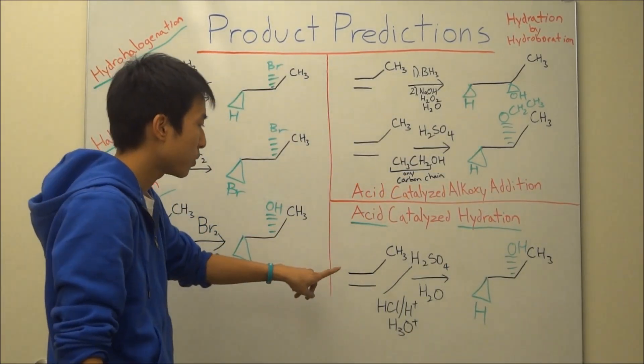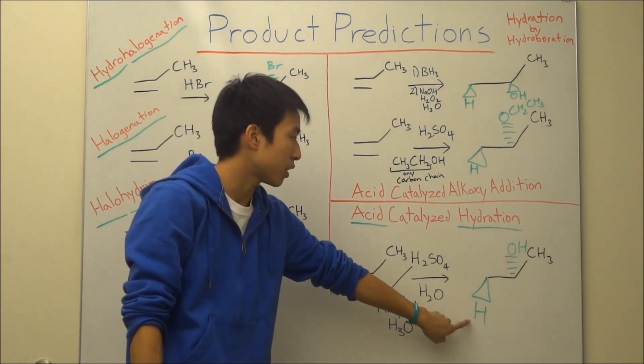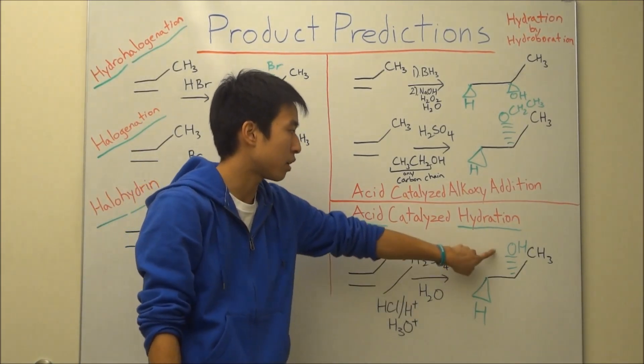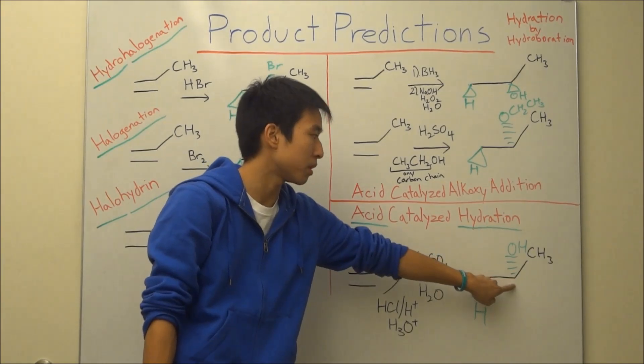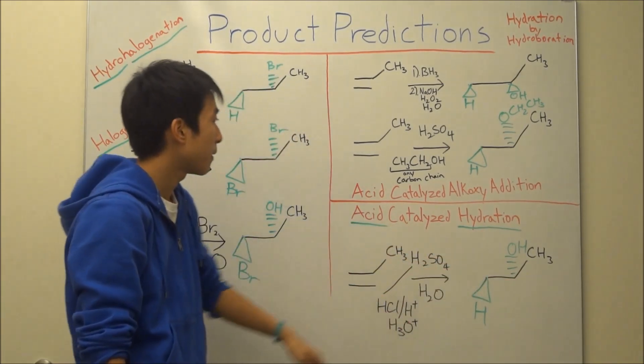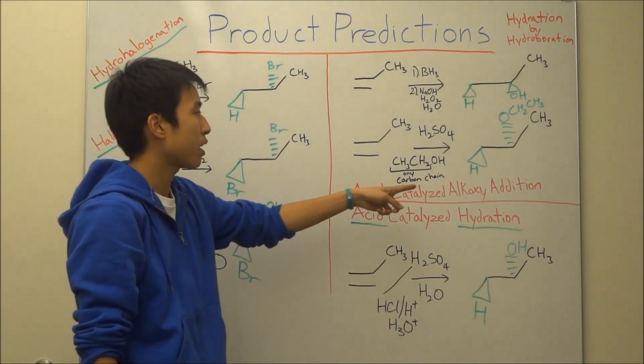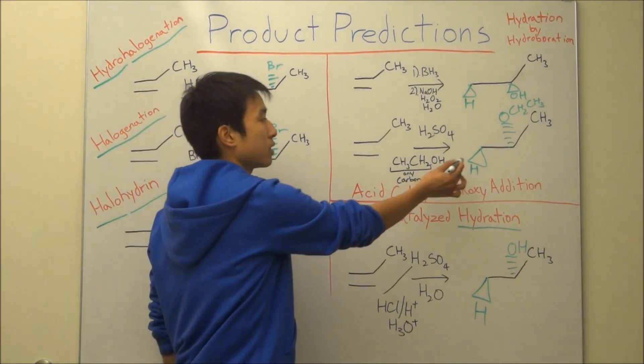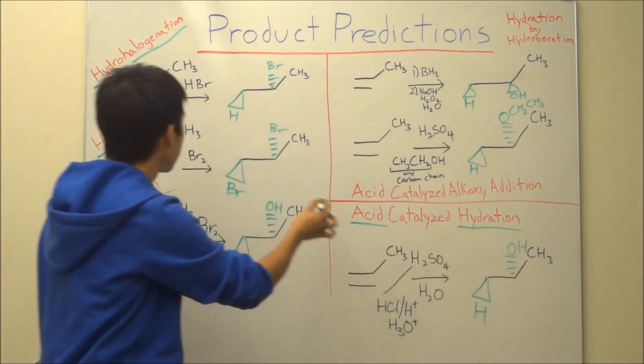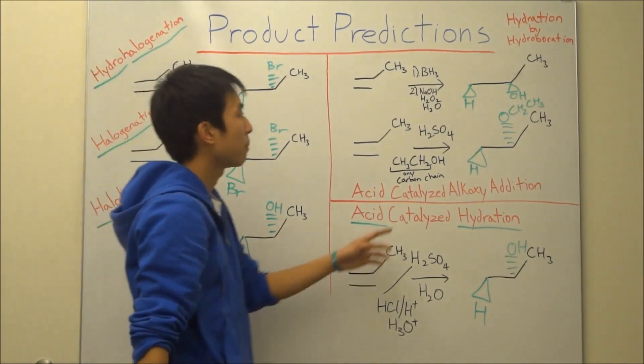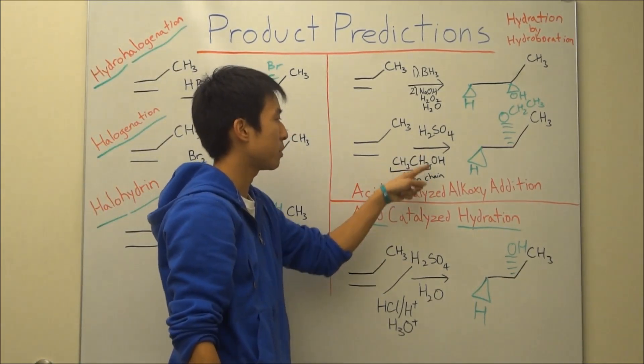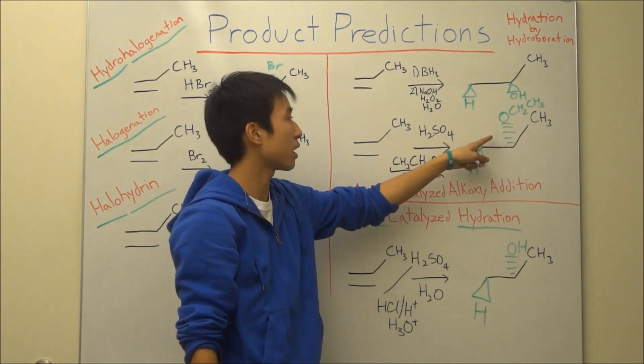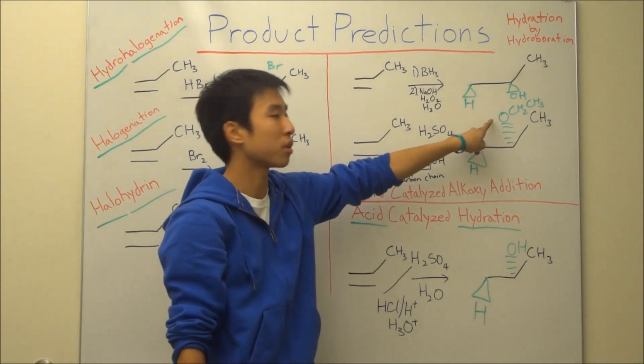Acid catalyzed hydration, you have your hydrogen on the less substituted side, and alcohol on the other carbon, opposite sides. And acid catalyzed alkoxy addition, you have hydrogen on the less substituted side, just like before. But this time, you have whatever carbon chain here added on to the opposite side, with the O, of course.